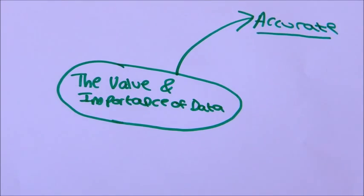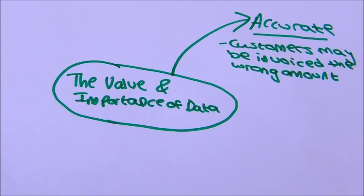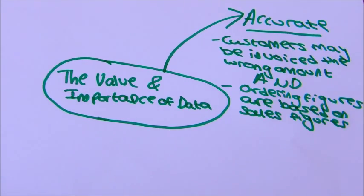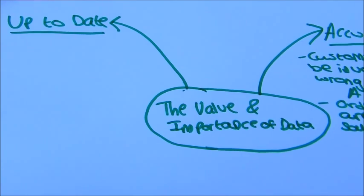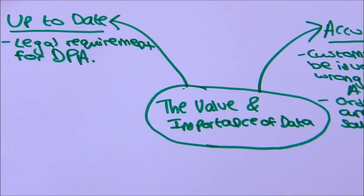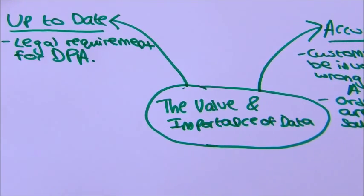Data needs to be accurate because customers may be invoiced the wrong amount and ordering figures are based on sales figures. Data also needs to be up to date because it is a legal requirement for the Data Protection Act.